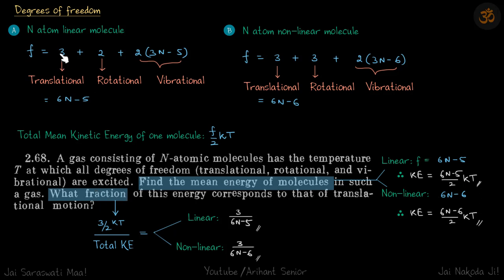Translational kinetic energy is (3/2)kT. So the fraction is (3kT/2) divided by total kinetic energy. Substituting the values gives the fractions for linear and non-linear cases.